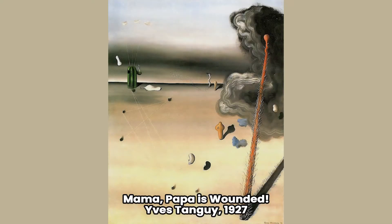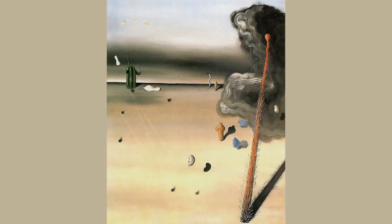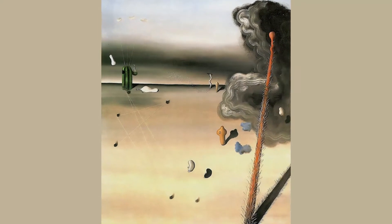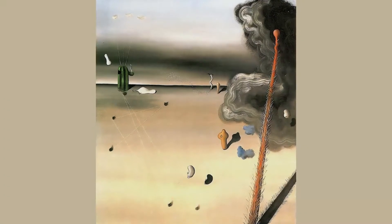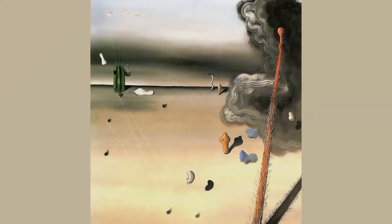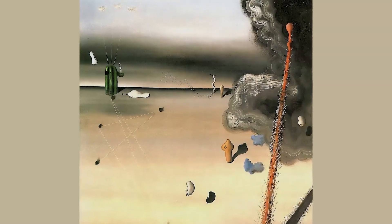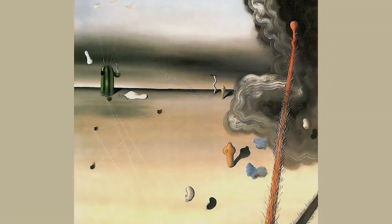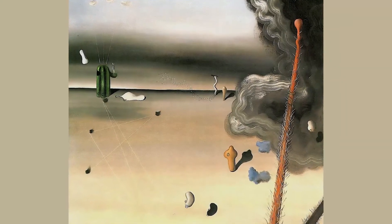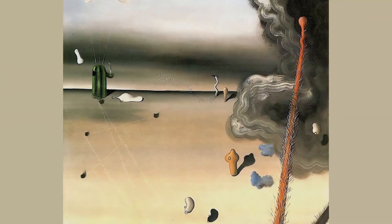Mama, Papa is Wounded — artwork by Yves Tanguy from the year 1927. Tanguy shows us a vast abstract landscape with a limited grayish color palette, a palette that only occasionally shows flashes and contrasting color accents.